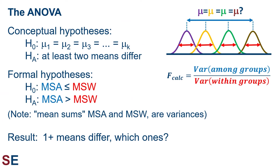One aspect of the ANOVA that makes it a bit different from some other statistical tests is that the conceptual hypotheses and the actual tested hypotheses differ somewhat. Our conceptual null and alternative hypotheses are about the means of the populations — are they all equal, or do at least two differ? The formal hypotheses are about the mean sums among (MSA) and the mean sums within (MSW): whether MSA is less than or equal to MSW, or whether MSA is greater than MSW. Note that while the language of the ANOVA uses the term 'mean sums,' the MSA and MSW are actually variances. If we reject the null hypothesis and decide that one or more population means differ, a second question arises: which ones?